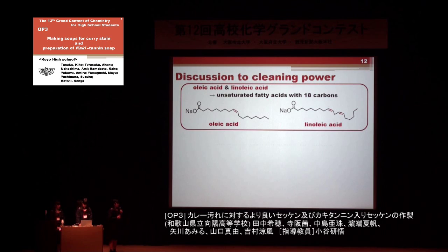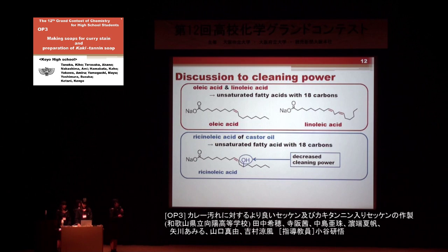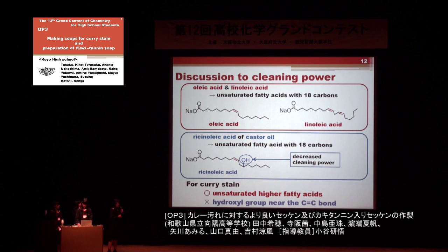However, the main component of castor oil is also an unsaturated higher fatty acid. Ricinoleic acid has a hydroxyl group near the unsaturated bond. One reason for the low cleaning power of castor soap may be derived from this hydroxyl group. The polarity of the hydroxyl group decreases the hydrophobicity of the aliphatic moiety. In summary, soap suitable for curry stain uses unsaturated higher fatty acids, but a hydroxyl group near the C=C double bond decreases the cleaning power.